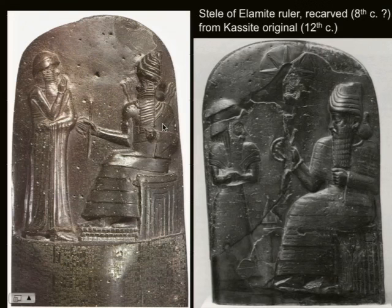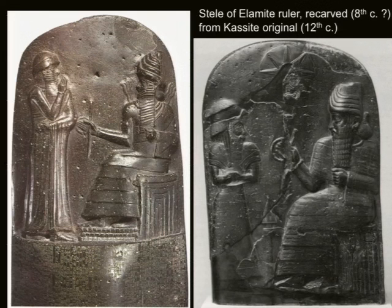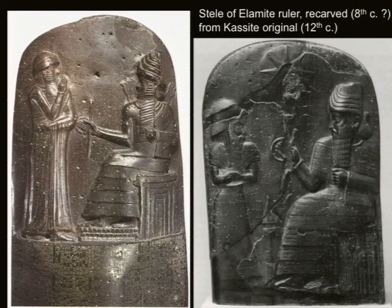Some of these monuments are actually copied outright. We can see here, for example, this is a stele of an Elamite ruler, a later one. But you can see the parallels — this is almost a one-for-one copy of the investiture scene on the top of the Code of Hammurabi. So these Elamites, as different as they are, as different as their architecture is, they're drawing on Mesopotamian cultural norms. We see that in the stele.